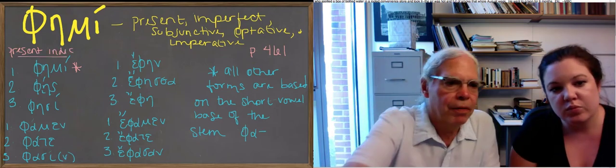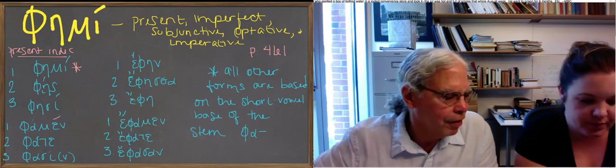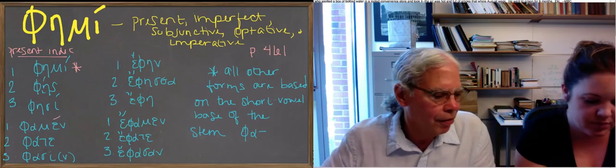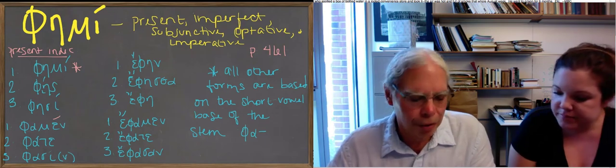I think famen, for example, should have an acute on the epsilon, because it's not an untoned word, and the same is true with fate.